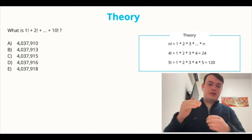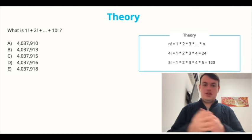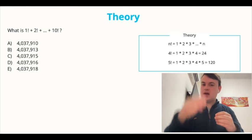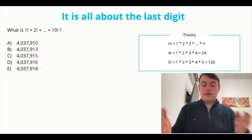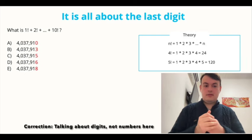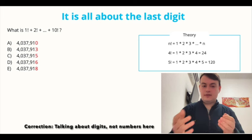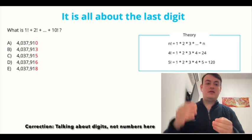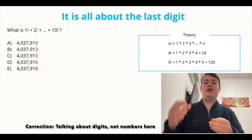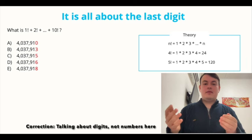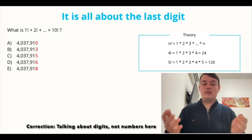If we look at the answer choices that GMAT provides us, we can notice that there is something that unites them all. The first six numbers of each answer choice are the same. It is only the last number that is different. So essentially what the GMAT asks us to do here is to find the last number of the sum of 10 factorials. Finding the last number is a much easier task than finding them all.